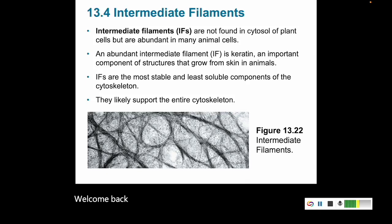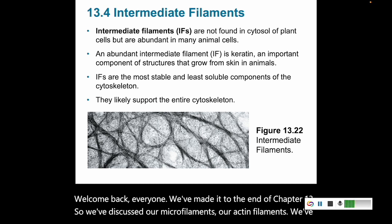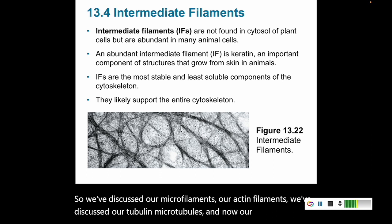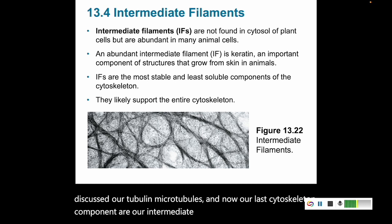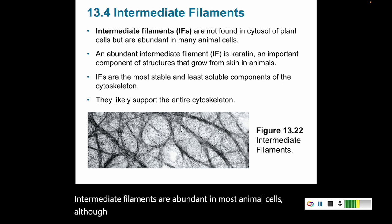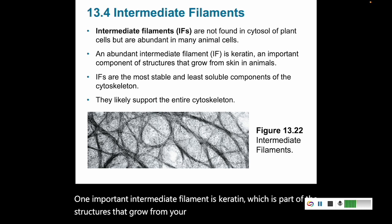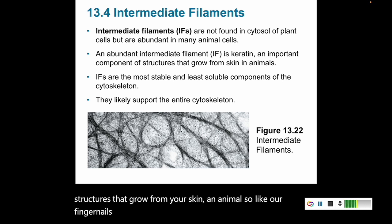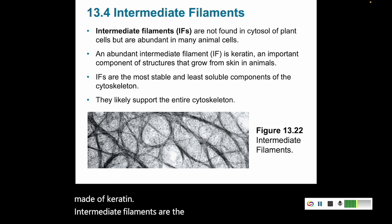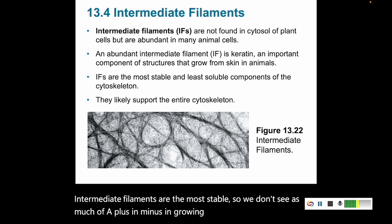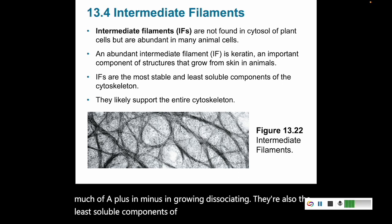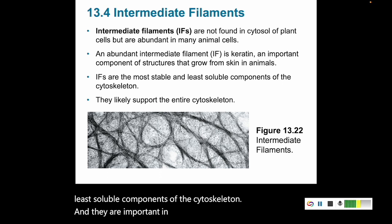Welcome back everyone, we've made it to the end of chapter 13. We've discussed our microfilaments, our actin filaments, we've discussed our tubulin microtubules, and now our last cytoskeleton component are our intermediate filaments. Intermediate filaments are abundant in most animal cells, although interestingly they're not found in the cytoplasm of plant cells. One important intermediate filament is keratin, which is part of the structures that grow from your skin — like our fingernails and hair. Intermediate filaments are the most stable, so we don't see as much of a plus and minus end growing and dissociating. They're also the least soluble components of the cytoskeleton and are important in supporting the entire cytoskeleton as a group.